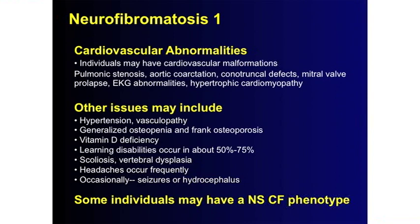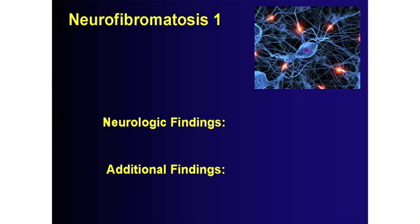Some individuals with NF1 have a Noonan syndrome craniofacial feature — definitely a cousin syndrome. Neurologic findings are aplenty. I don't think I've met really one NF individual without issues, and specialists who study neurocognition in NF1 confirm: especially as kids go to college, lots of learning issues, learning disabilities, and executive functioning problems come out. On MRI, NF1 individuals can have big brains — megalencephaly — which has now been associated with the RAS pathway, demonstrating how important it is in development.